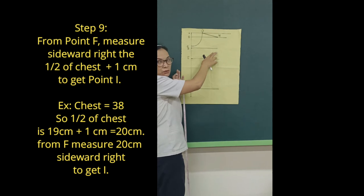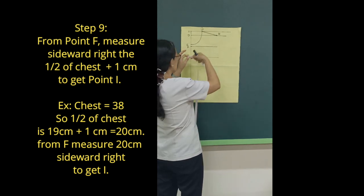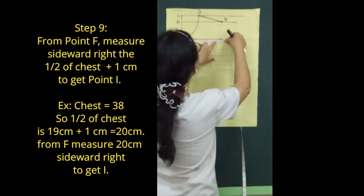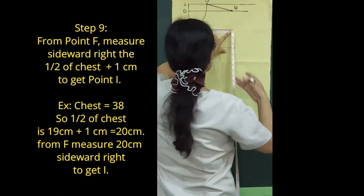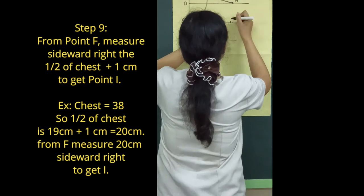Step 9: From point F, measure sideward right the 1/2 of chest plus 1 cm to get point I.